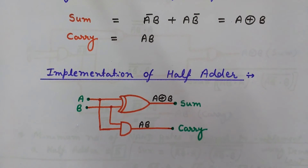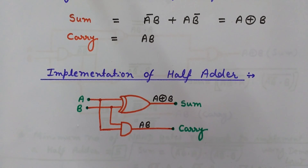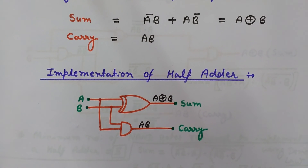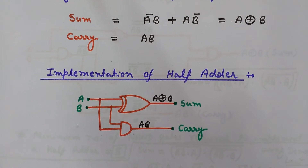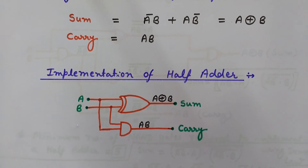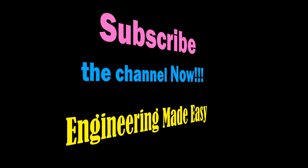In the next video lecture we will see how we can represent a half adder using only NAND gates, and how to implement a half adder using the minimum number of NOR gates. In further videos we will see full adders and how to implement full adders using half adders. If you liked it, please click the like button and subscribe to Engineering Made Easy.